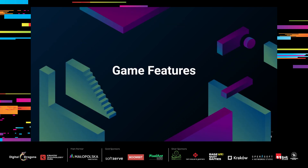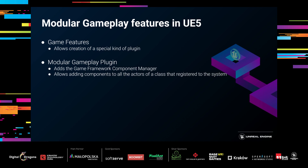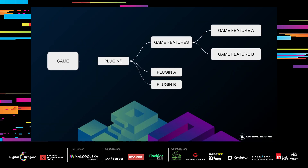Let's quickly take a look at what comes with Unreal Engine 5. There are game features and also a modular gameplay plugin. The modular gameplay plugin adds a game framework component manager, which allows you to add components to actors of a selected class that are registered to the system. This means you can inject components from plugins without the game knowing about the components you want to add — essentially inject anything into your game just using components.